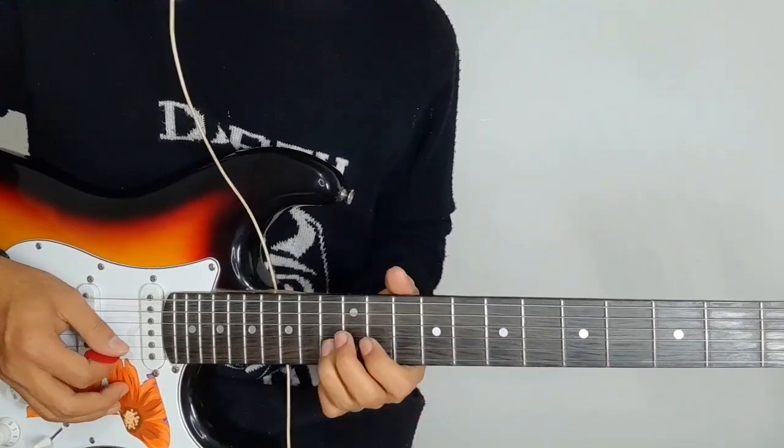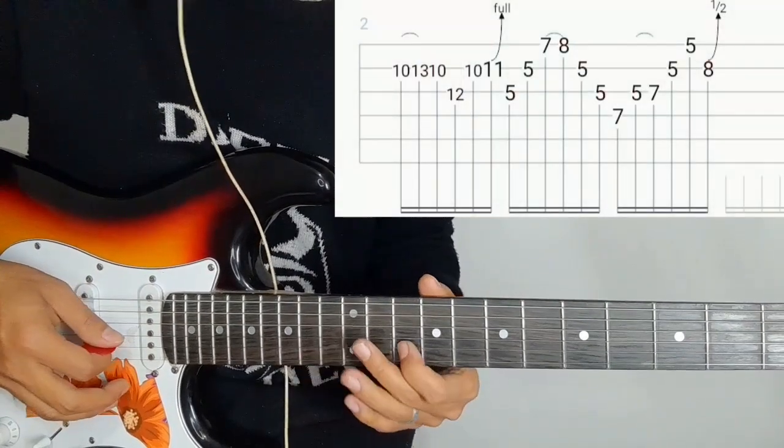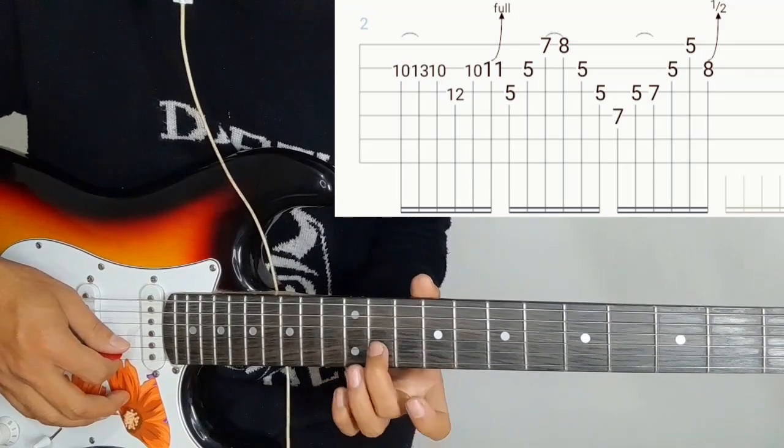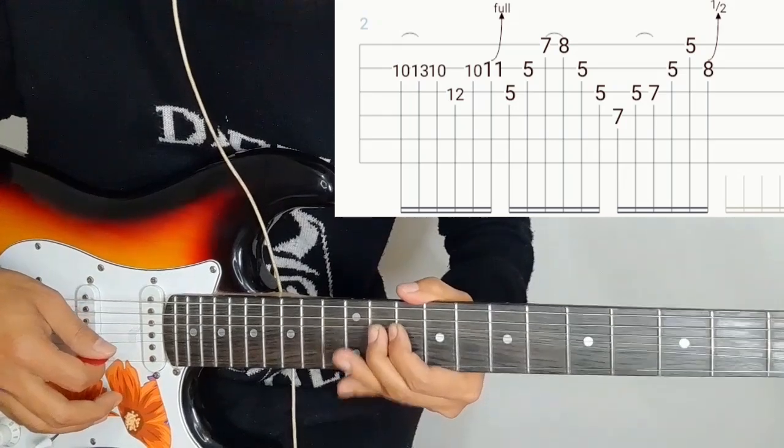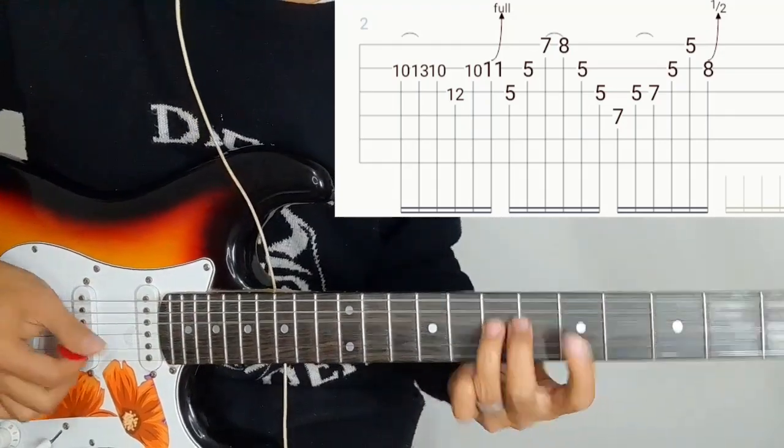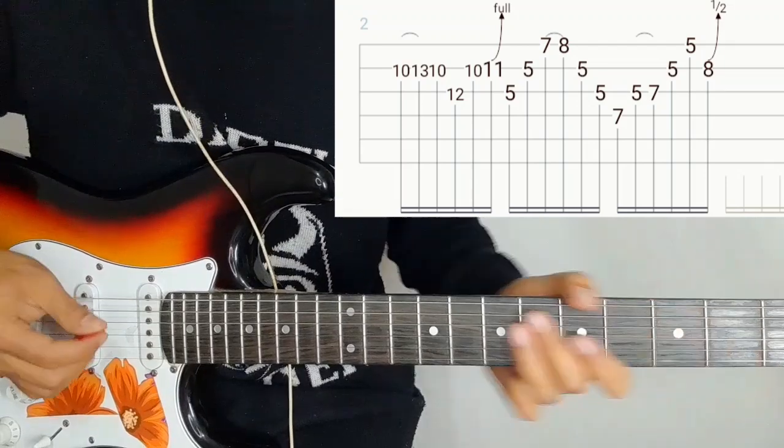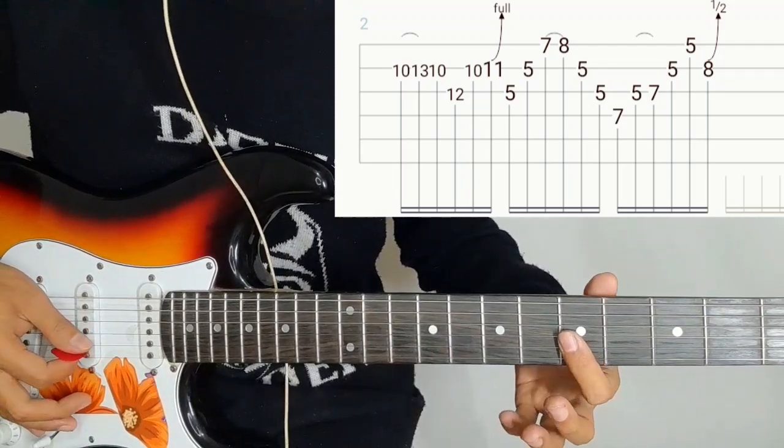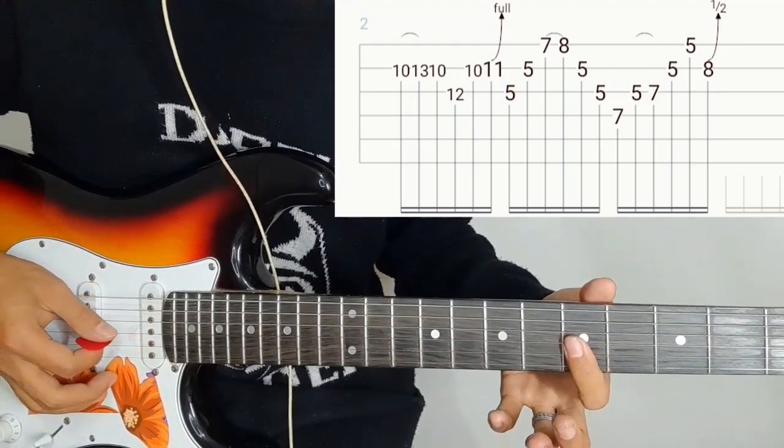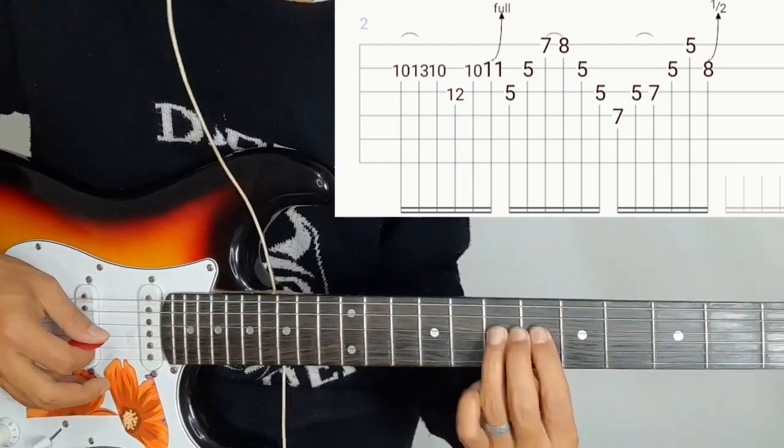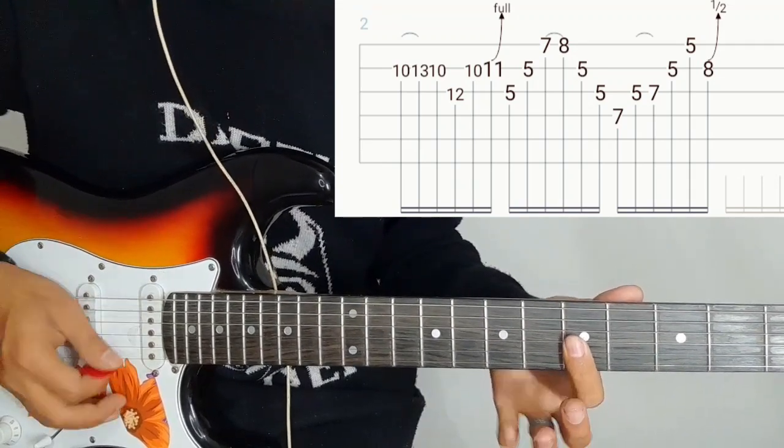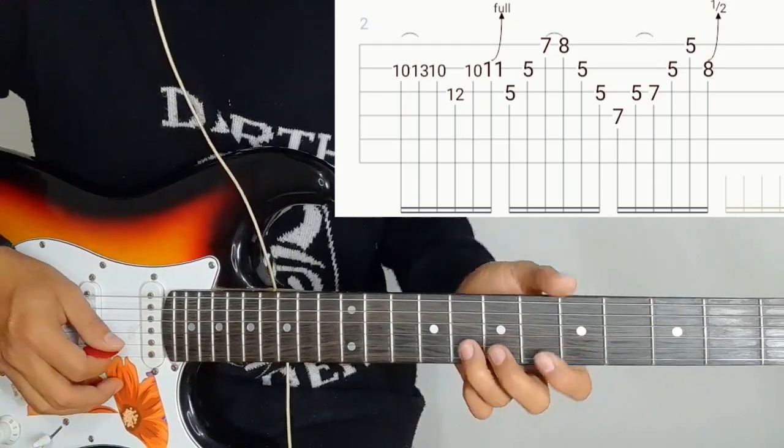Second string 10-13 with sliding, then second string. Then do a long bending. On the 5th string play 5-5, then 5th string 7-8, then the same string 5-5, 4th string 7. The 3rd string 5-7 hammer-on, second string 5. Second string 8, first string 5, second string 8 with bending.